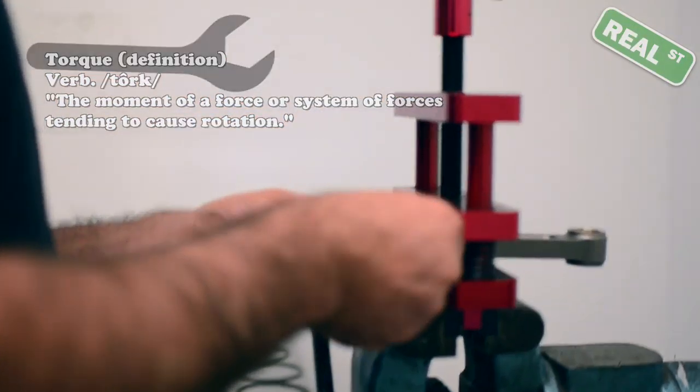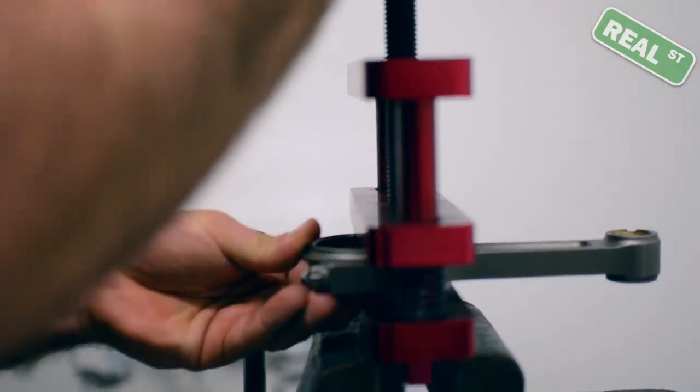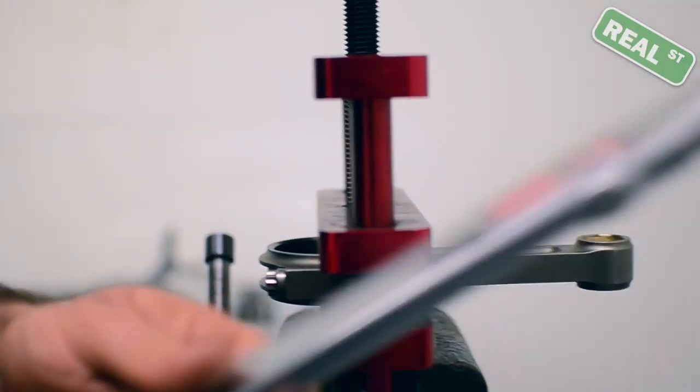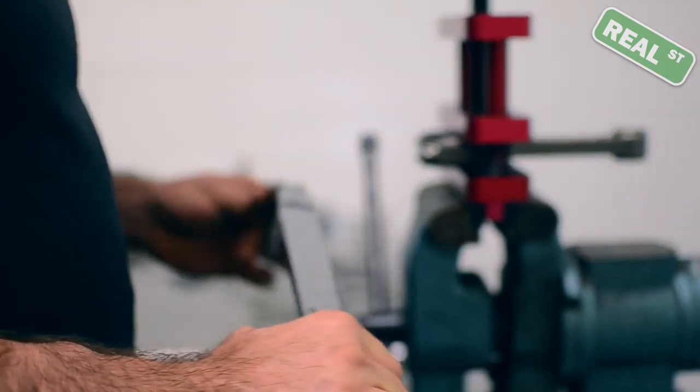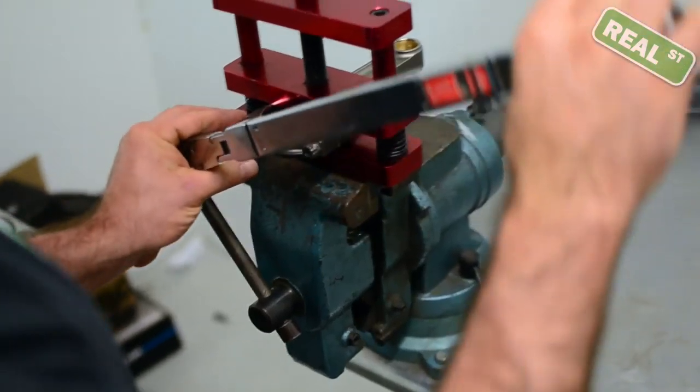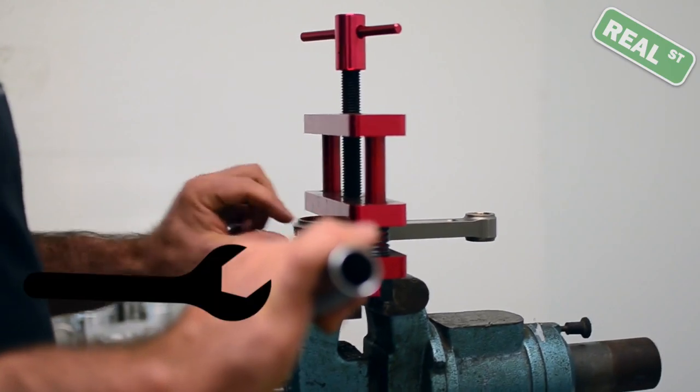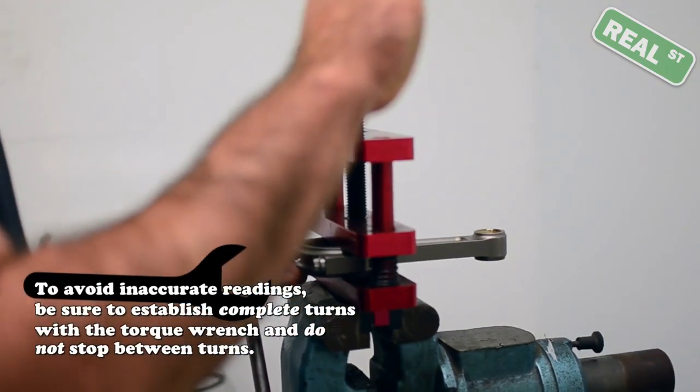While you're torquing the bolt, it's important that you have a known good torque wrench and that you are strong enough to torque the fastener up in an even pull. You do not want to be bouncing on this wrench to tighten it up.